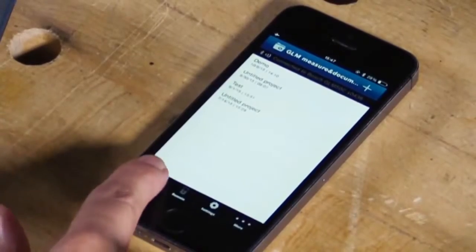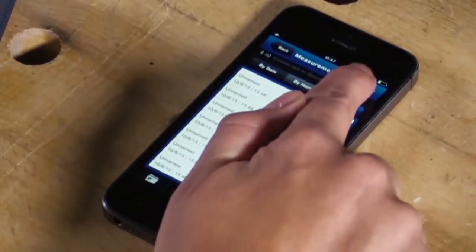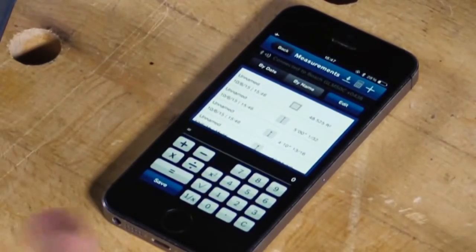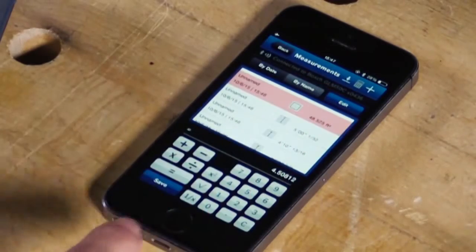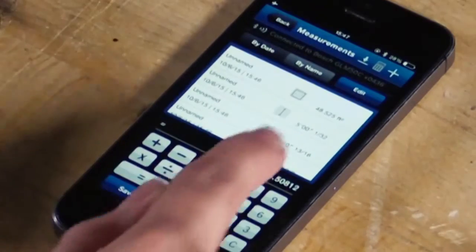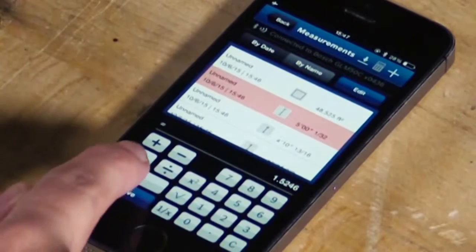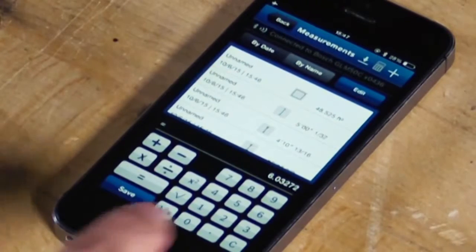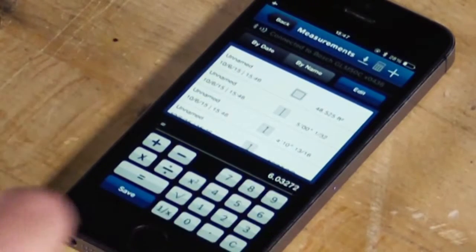In the list mode there's two ways to do calculations with the measurements that you've taken. One way is to use the calculator icon at the top and simply highlight a measurement, add, subtract, divide, whatever math you need to do, then click the next measurement that you want. Hit equal and then you'll see that another measurement is added to the list.